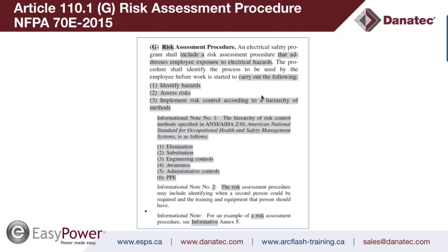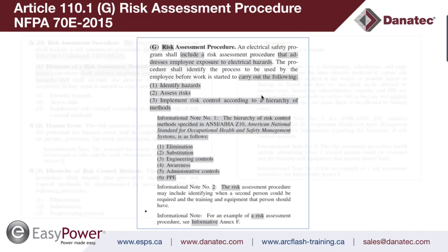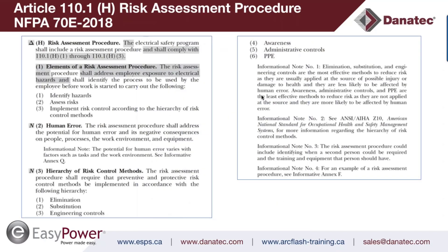The mistake in industry has been a bottom-up approach to applying control methods because the focus was on hazard and PPE, which is at the bottom of the hierarchy. In reality, 70E and Z462 say we need to de-energize first as a priority, then justify energized work, and then with the risk assessment procedure look at the remaining controls to reduce the inherent or initial risk level to a residual risk level that is as low as reasonably practicable.